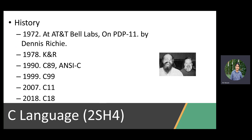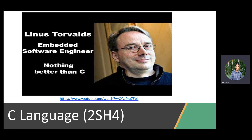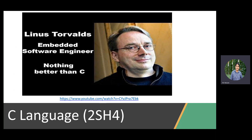C was developed mainly in the 70s at Bell Labs. If you have a few minutes, it's very interesting to watch a video from the inventor of C and Linux, Linus Torvalds, where he argues why nothing is better than C. C has so many advantages, especially for embedded systems. This is why, even though it was developed in the 70s — more than 50 years ago — it's still the widely used language in embedded system programming.